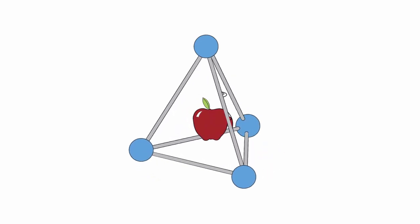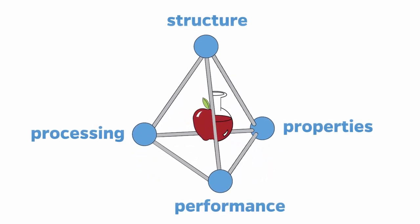So, what does any of this have to do with brownies? As it turns out, a lot. After all, brownies are made of atoms, they have properties which you can affect by how we process or bake them, and we want them to perform well.